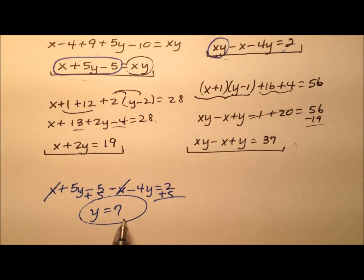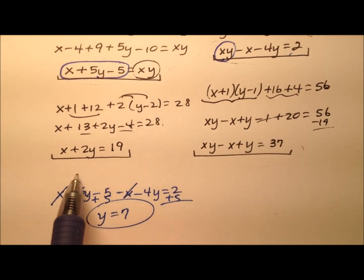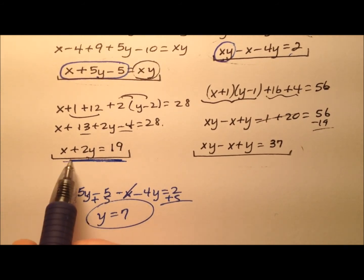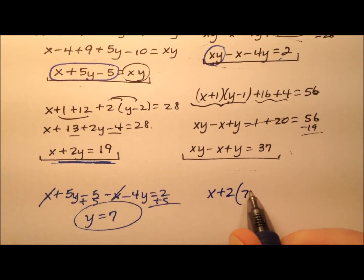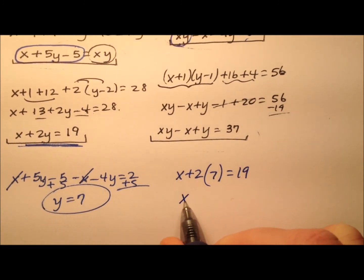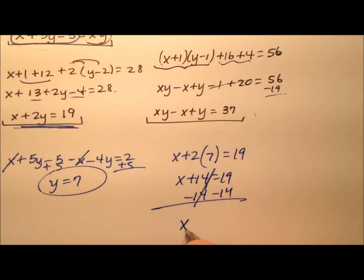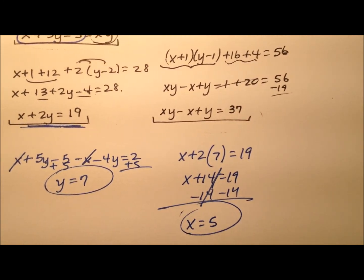So if y is 7 then, you can plug this wherever you want to plug it, in fact we can plug it right here if you want, that looks pretty easy. So x+2y, y is 7, that equals 19. So x+14 equals 19. If I just subtract 14 from both sides, it looks like x equals 5.